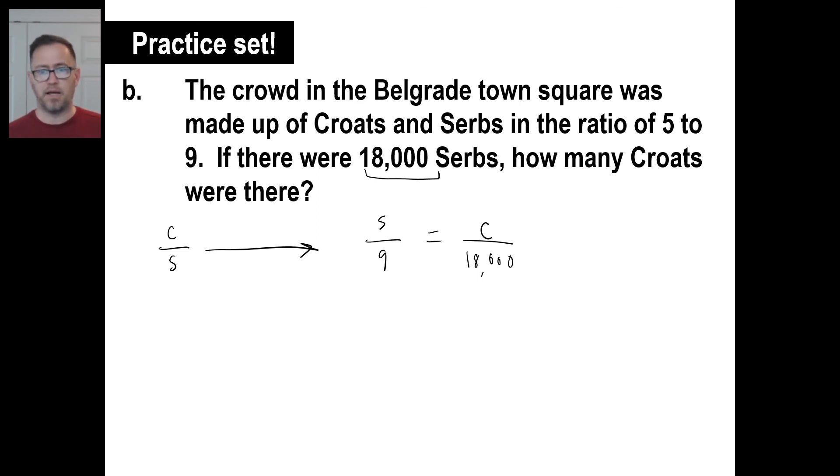And if you don't see it, then just cross multiply. 9C equals 5 times 18,000. Good gravy, it's going to be 90,000. Sometimes doing this trick will help you to not have to do that. But 9 times what is 18? 2. 9 times what then is 18,000? 2,000. So 5 times 2,000 will be 10,000. So that is your answer.